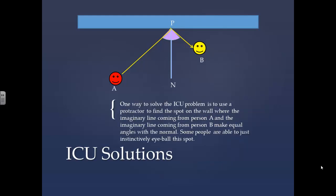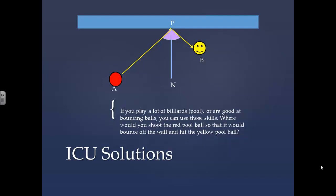One way to solve the ICU problem is to use a protractor to find the spot on the wall where the imaginary line coming from person A and the imaginary line coming from person B make equal angles with the normal. Some people are able to just instinctively eyeball this spot.